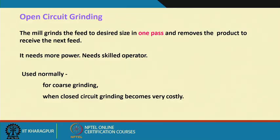Grinding can again be like crushing — open circuit grinding and closed circuit grinding. Open circuit grinding means the mill grinds the feed to the desired size in one pass and removes the product to receive the next feed. The material is given a predetermined residence time inside the mill, and then it goes out. The time to travel inside the mill decides the retention time, and there is no control on the quality of what is being discharged — that is called open circuit grinding.